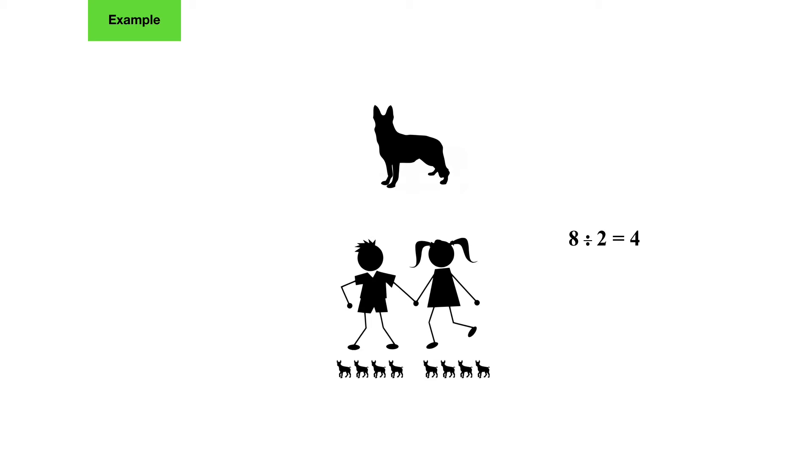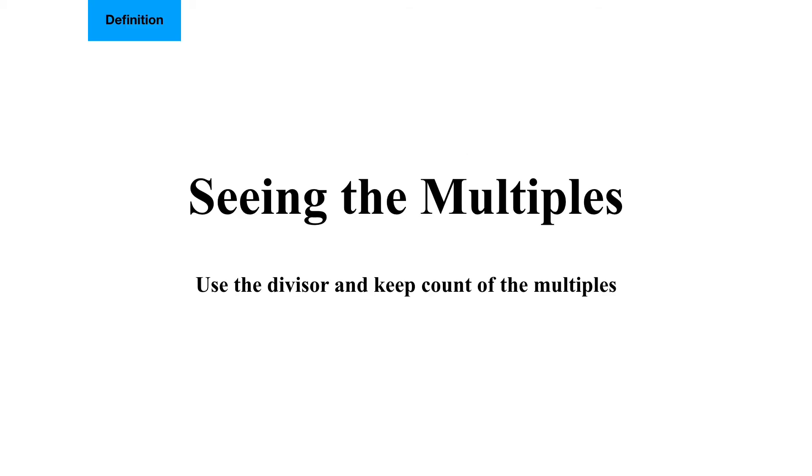This looks quite easy to imagine when we have a story, but how do we do it quicker than having to create a visual story each time? We can use multiples. We're going to use the divisor - the amount of people or items that we divide the number into - and use it to keep count of the multiples.